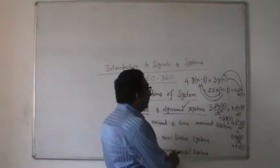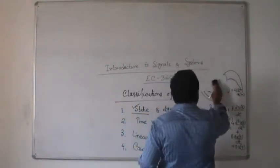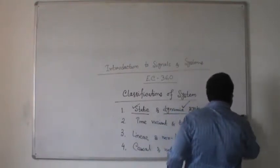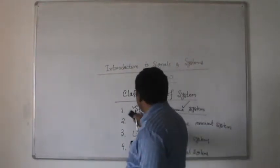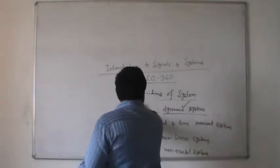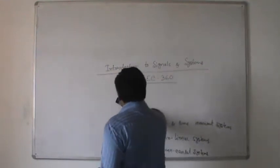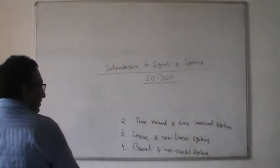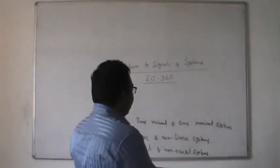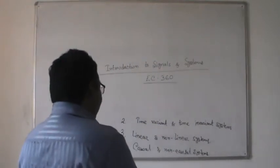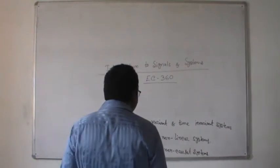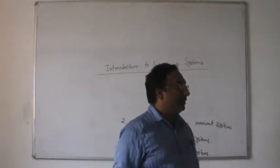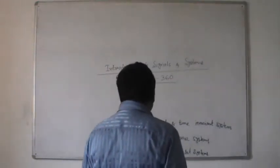So these two are the examples of dynamic system — the first one in discrete form, the second one in continuous time format. Now we will come to the second classification: time variant and time invariant system. That means there is a system in which the parameter variable is varying with respect to time, and a system in which the parameter is constant with respect to time.